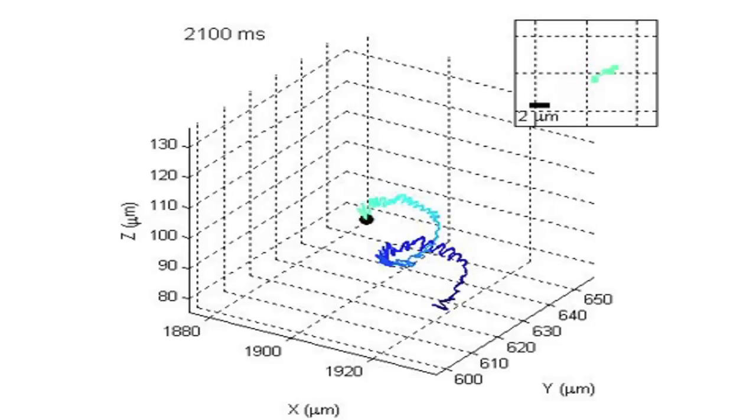As the sperm swim, their heads beat in an elliptical motion of small magnitude, while on a larger scale, their whole forward trajectory rotates to form what's known as a chiral ribbon.